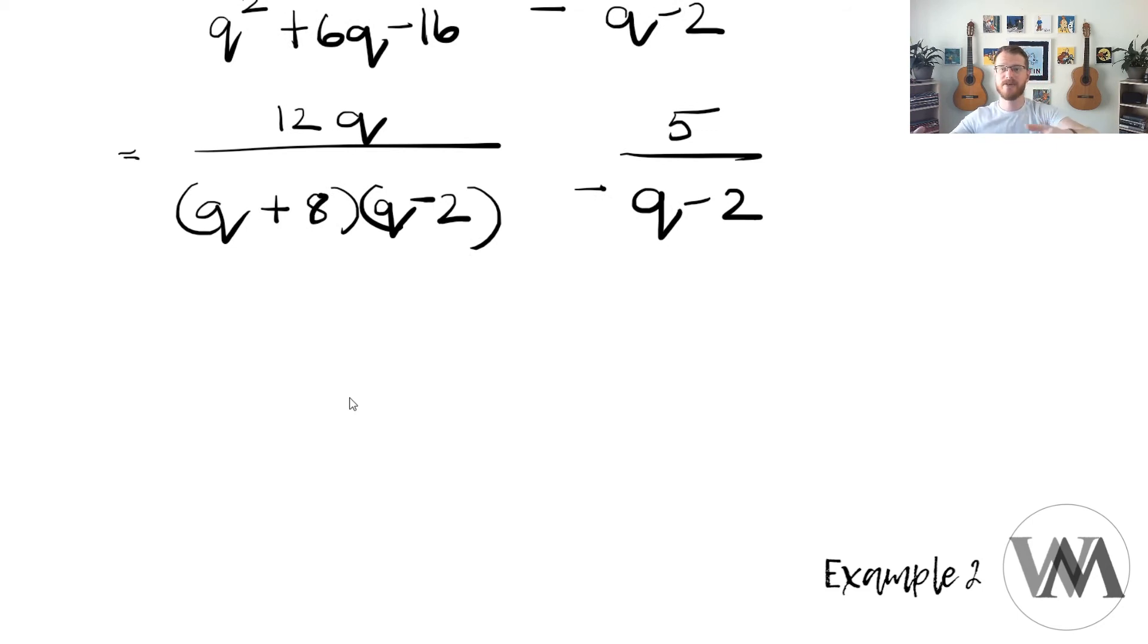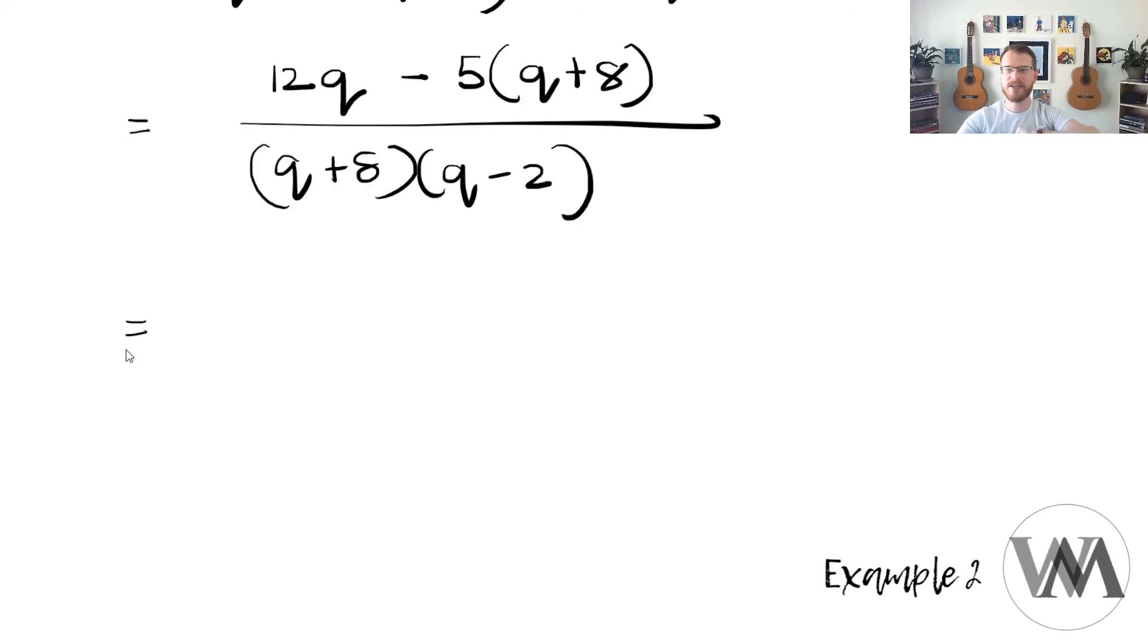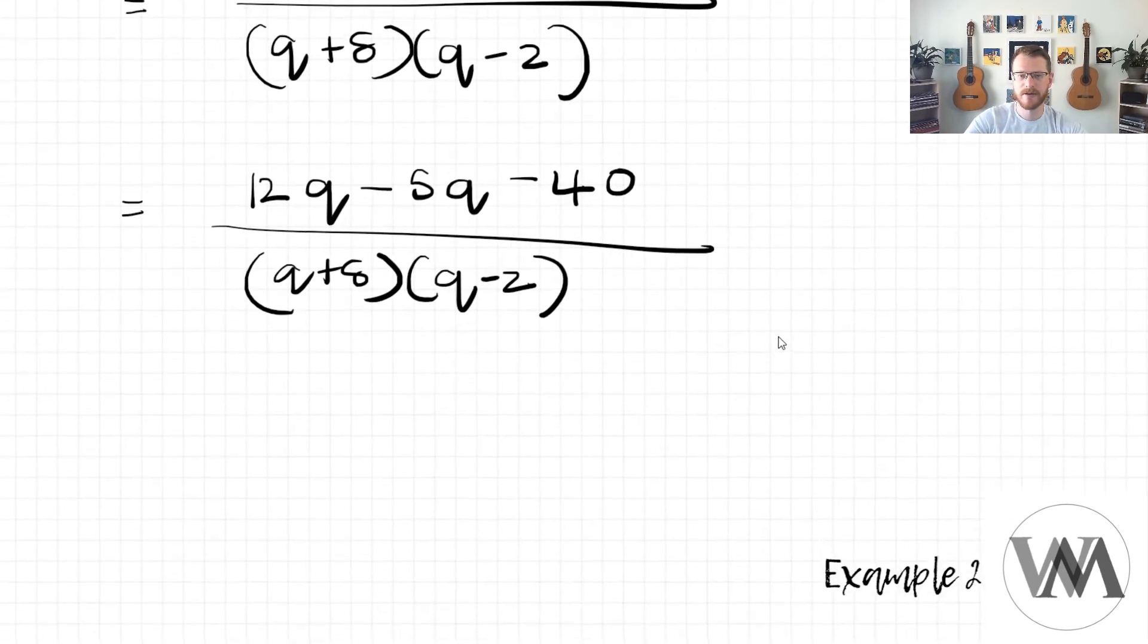Now I see I'm going to follow this rule again. We're going to say, well, this is already the lowest common denominator. 12q will stay as is. And since q minus 2 is present in both terms, I'm only going to multiply my 5 with q plus 8, over q plus 8, q minus 2. Now we need to find the products of the numerator. 12q minus 5q minus 40 over q plus 8, q minus 2.